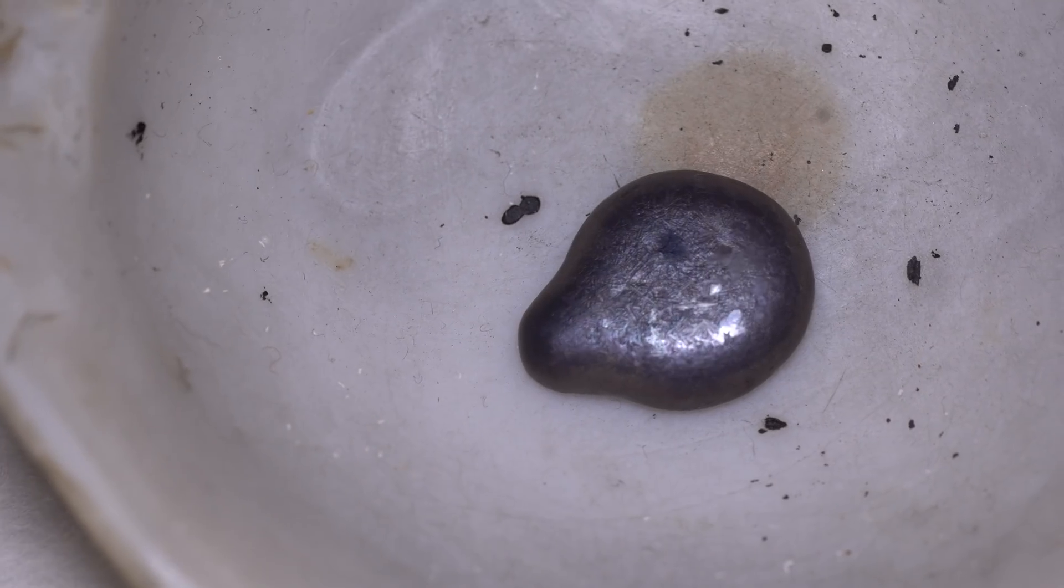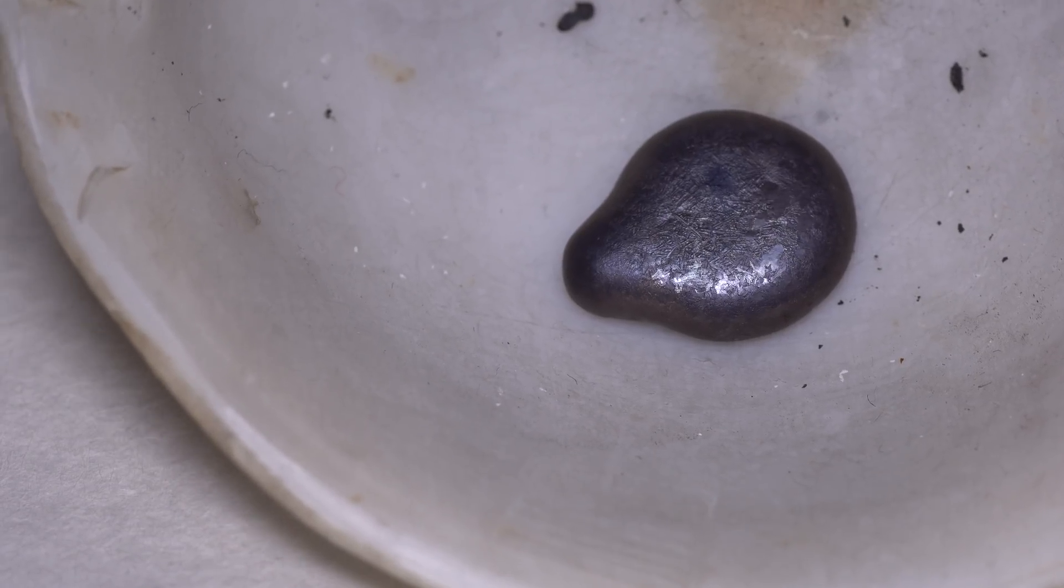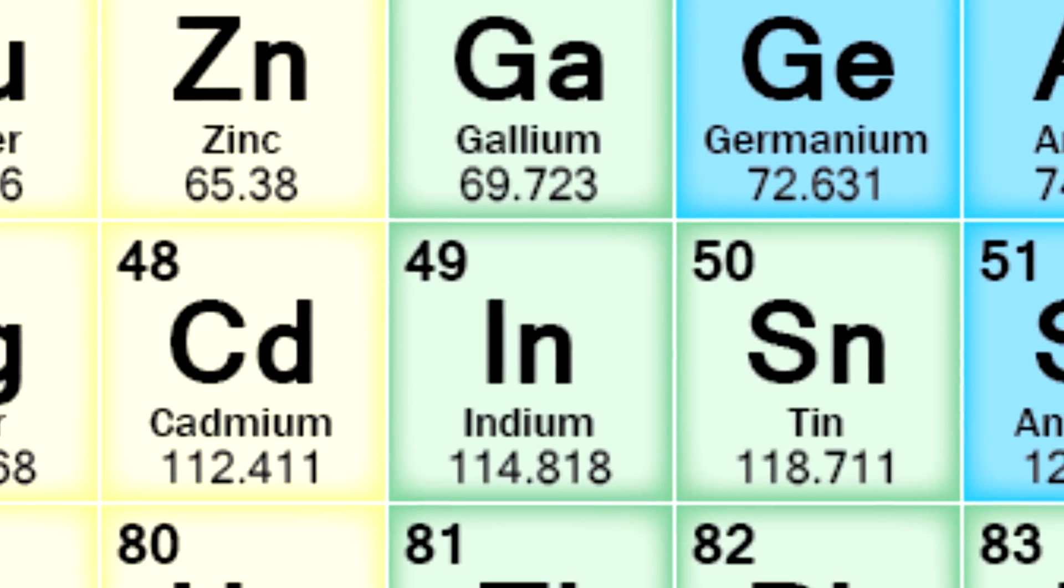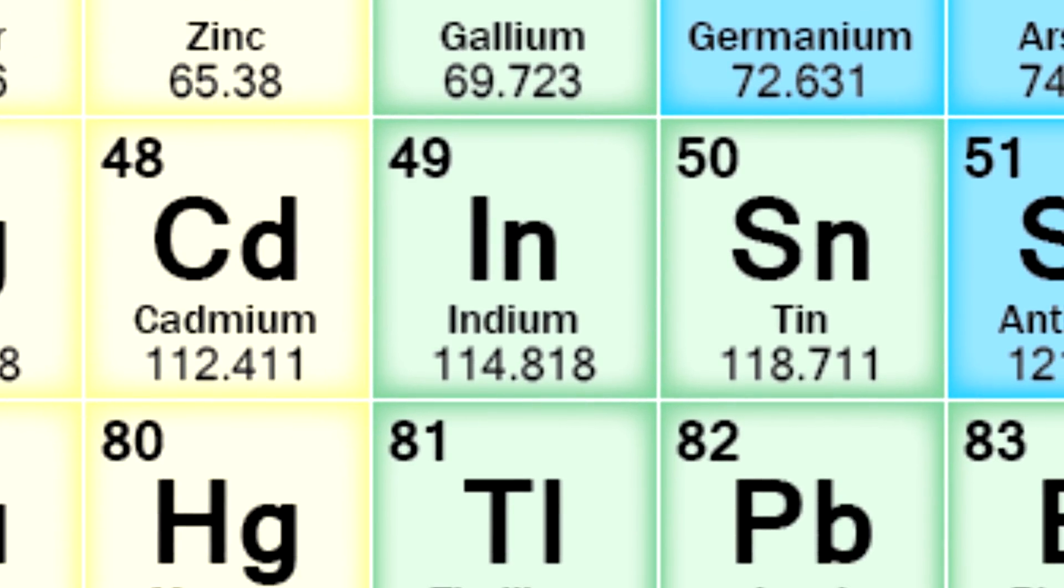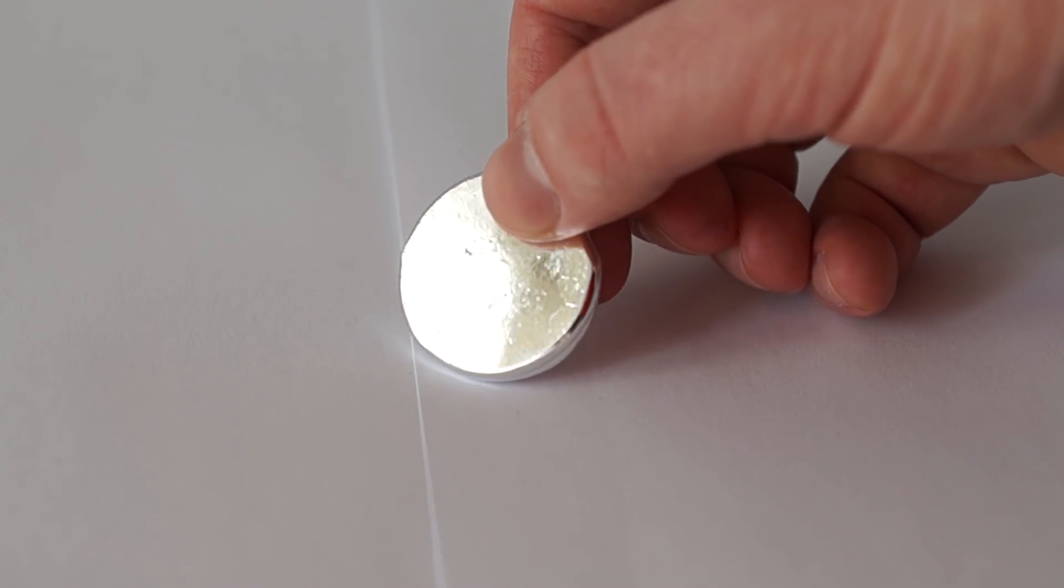This sets it apart from other metals belonging to group 13. For instance, chemical activity of metals starting from aluminium and finishing with indium steadily decreases. Indium doesn't even oxidize when it is exposed to air and remains shiny.